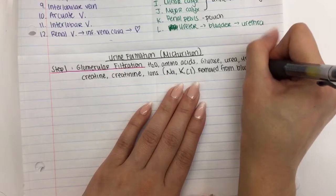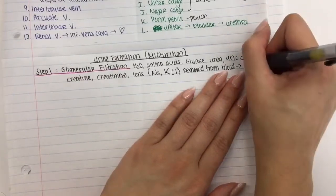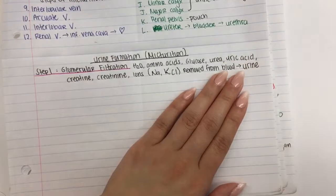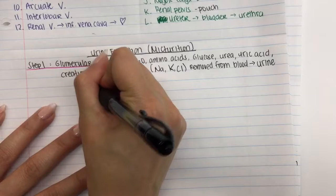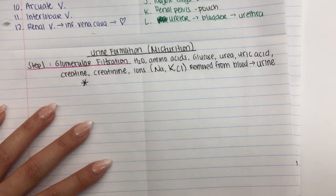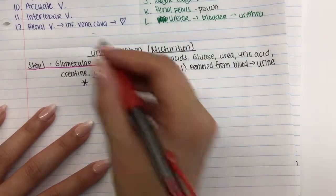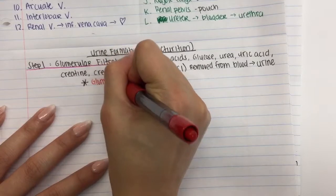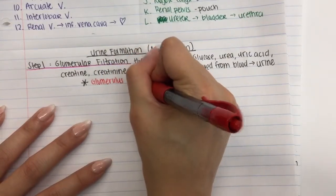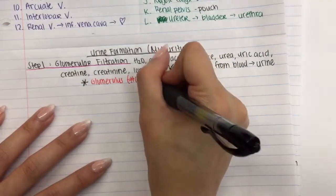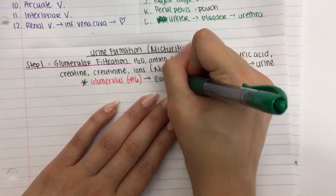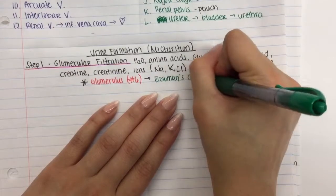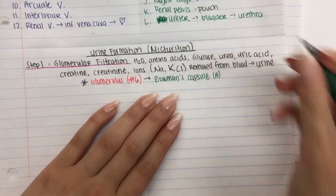All of that is now in your urine pathway. Step one occurs in the glomerulus — since the glomerulus is red in our diagram, I'm going to write glomerulus number six. All the stuff will get pulled out of the glomerulus and put into Bowman's capsule, which I'll write in green and label with the letter A.